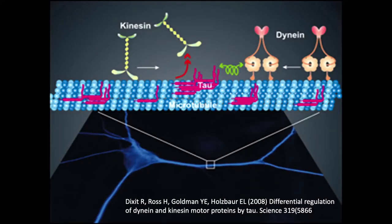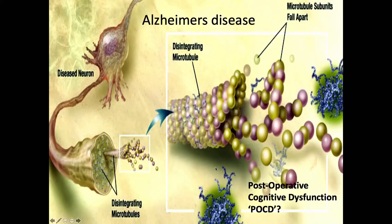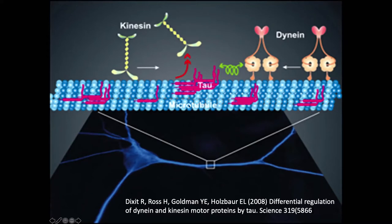Microtubules are very interesting and important — they do many things. In a neuron, for synaptic plasticity to adjust a distant synapse, materials synthesized in the cell body are conveyed along the dendrite by motor proteins kinesin and dynein, which carry materials and jump from microtubule to microtubule, turning at branch points. They have to know where to deliver their cargo — they need some kind of FedEx code.